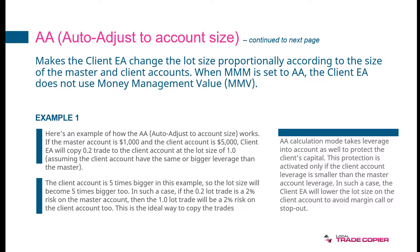AA is the default option and it makes the client EA change the lot size proportionally according to the size of the master and the client account. If you risk 1% on the master, the same 1% will be risked on the client EA, and the client EA will adjust the lot size on the client accordingly, making it bigger or smaller according to the size of the client account. When MMM is set to AA, the client EA does not use the money management wallet, so those other three money management parameters are of no use.